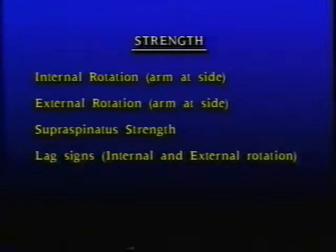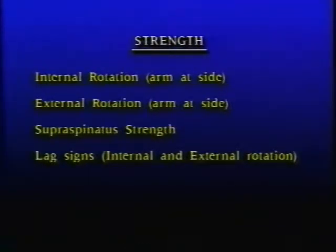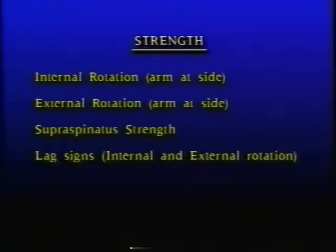Strength should be assessed with the arm at the side, specifically for internal rotation and external rotation. Supraspinatus strength is assessed by abduction of the internally rotated arm with the extended elbow. Lag signs represent the difference between active and passive motion for both internal and external rotation, and this gives accurate insight into the configuration of the rotator cuff tear.